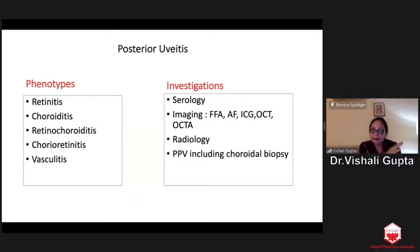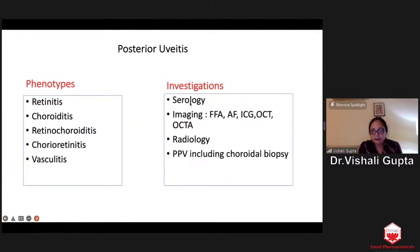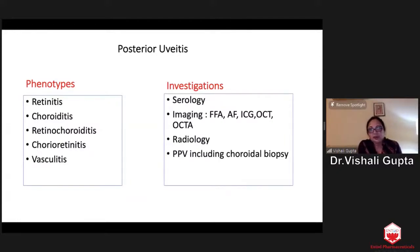All of them have different etiologies, and it's very important that you know what you are dealing with. Once you know which phenotype is present, the investigations and further management will become easier. Then there are different investigations. One is serology — but when patients come to us, they are carrying a whole lot of serologic investigations. Believe me, serology has no role in uveitis. Do not unnecessarily order any serological investigation except syphilis. That is the only one which gives us some important information.